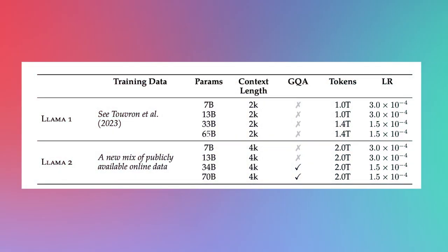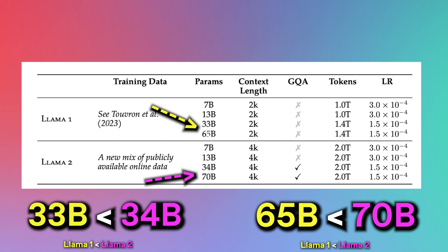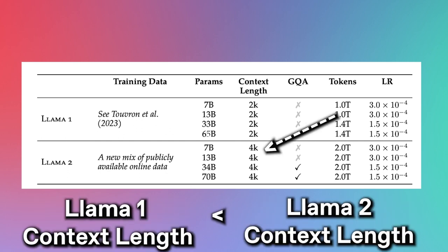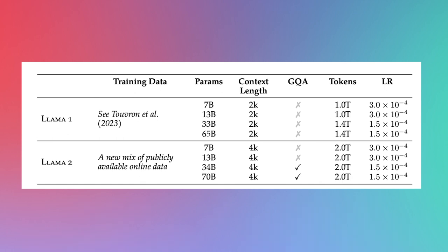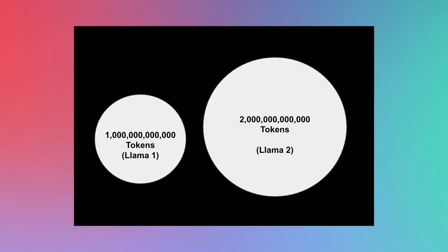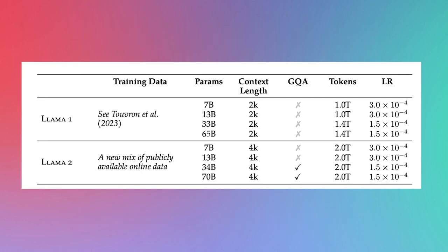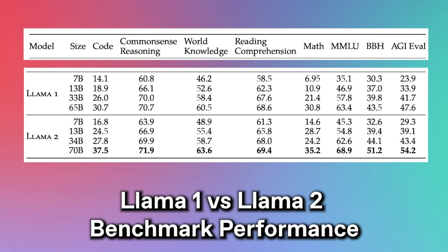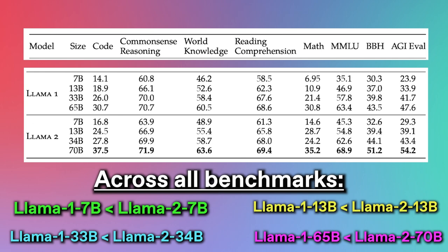Here's how the Llama 1 family compares to Llama 2. The largest Llama 2 models each have more parameters than their Llama 1 counterparts. Llama 2 also has a universally larger context length — double the size of Llama 1. Its two largest models have grouped query attention for improved inference scalability, and all Llama 2 models are trained on significantly more tokens. In benchmarks, Llama 2 is monotonically better — for example, beating predecessors by at least five points on MMLU for each respective model size.